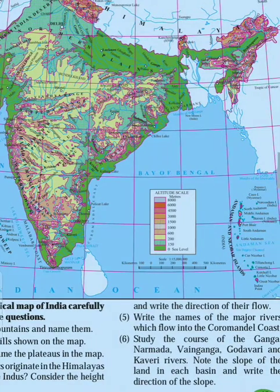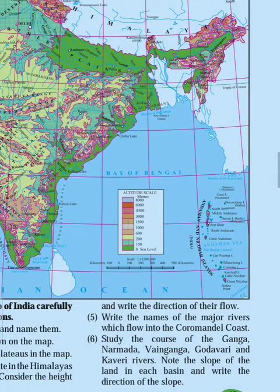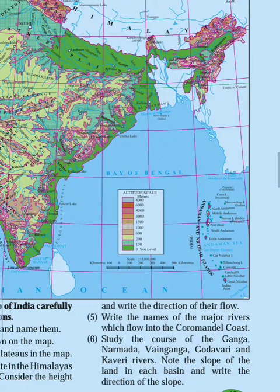Hello students. Let us see the next question. Study the course of the Ganga, Narmada, Wainganga, Godavari, and Kaveri rivers. Note the slope of the land in each basin and write the direction of the slope — meaning, note which direction the slope is and write the direction of the slope.